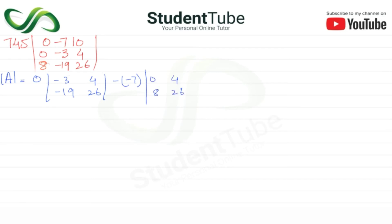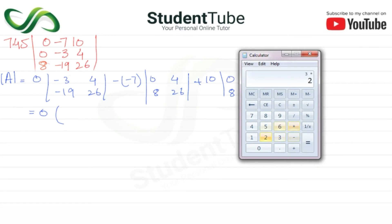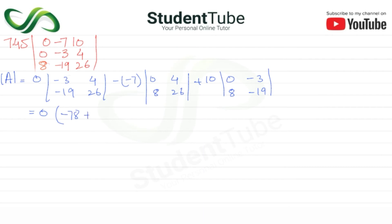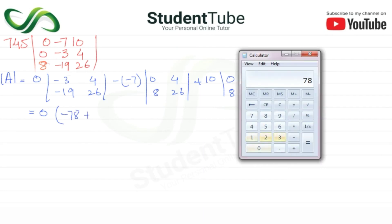Or 26, then plus 10. So 0, minus 3 and 8, or minus 19. So 0, minus 3 multiply by 26. 3 multiply by 26 is 78. Plus 19 multiply by 4 is...